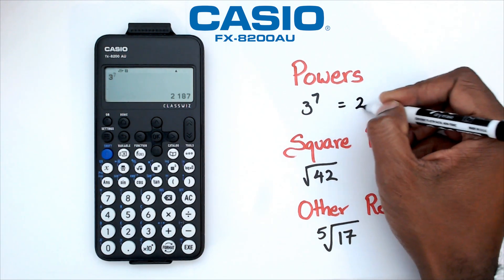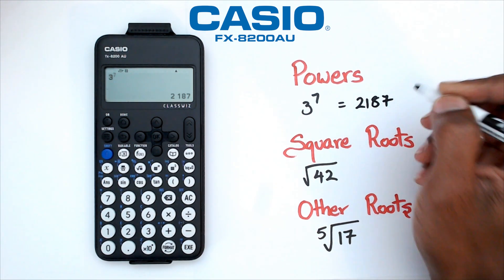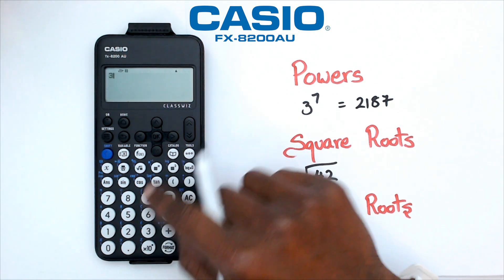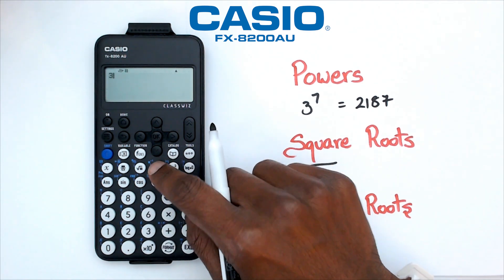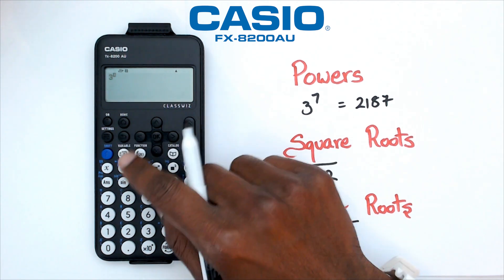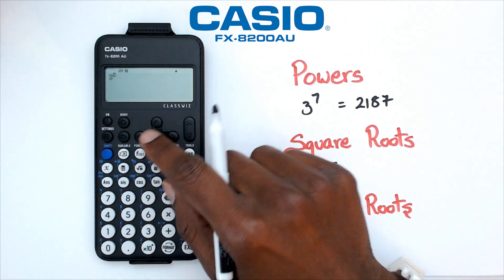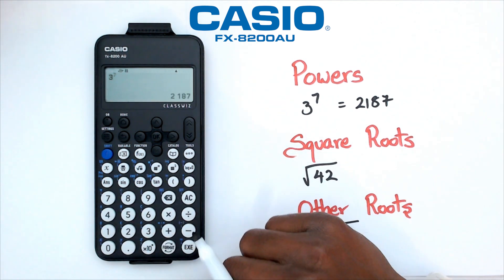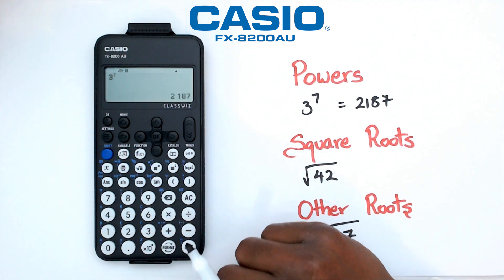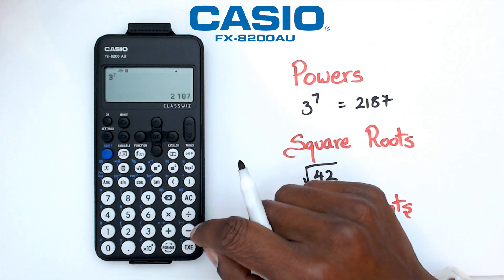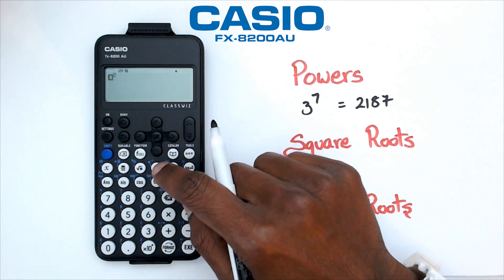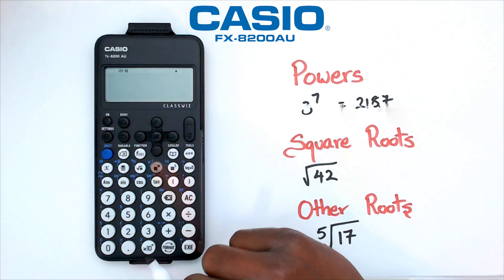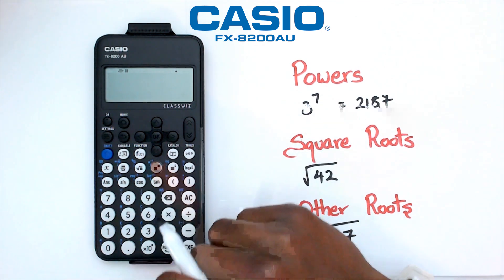Now, that's one way of doing this. The second way would be to simply click on 3, click on the power button, and it'll automatically put 3 as the base. Then you'd be able to put the 7 in, and you're going to get 2,187. It just makes it a speedier process. Either way, whichever way is easier for you, stick with it.